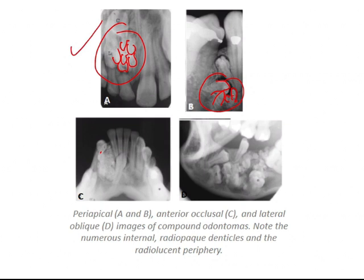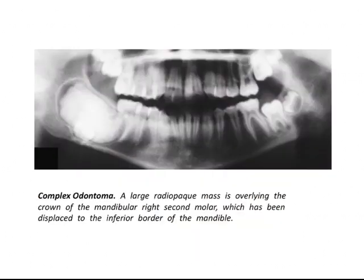This is also a compound odontoma — a bunch of malformed denticles is observed. Numerous radiopaque denticles and a radiolucent periphery can be seen. So this is compound odontoma.